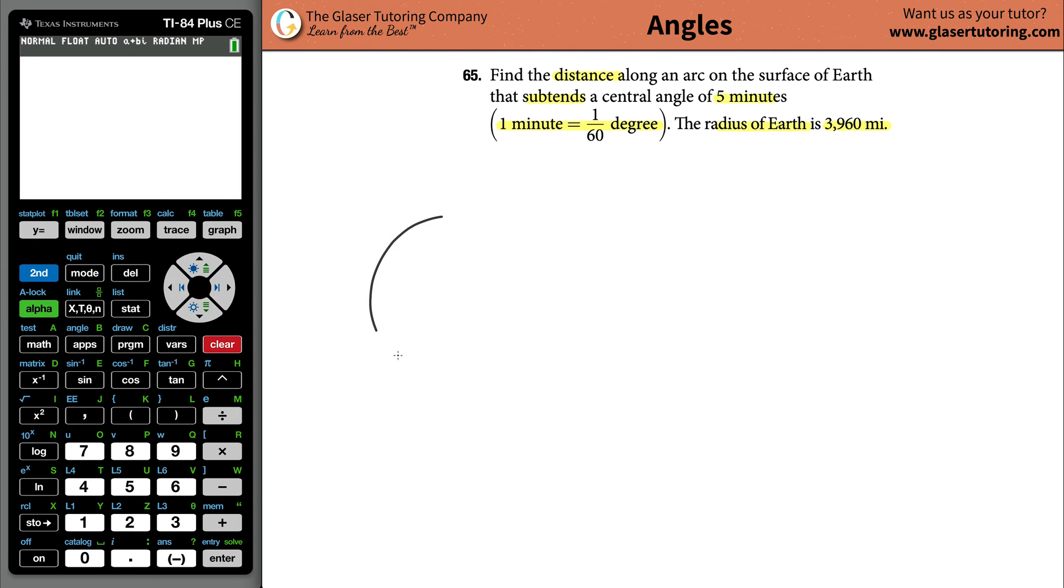All right, so first thing is just draw a little circle that represents the surface of the Earth. It also tells us the radius of Earth, and that was 3,960 miles, so 3,960 miles.